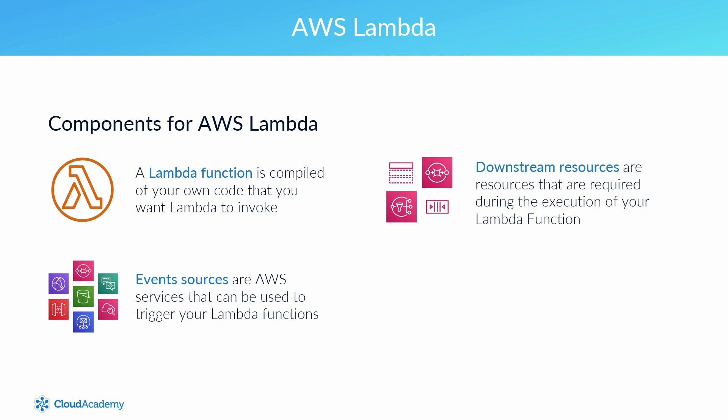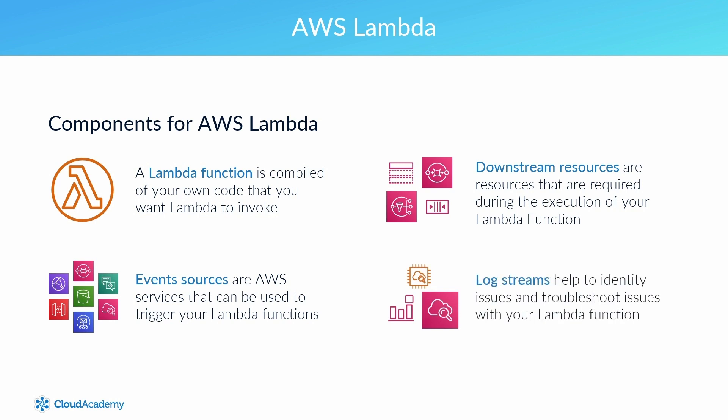Downstream resources are the resources that are required during the execution of your Lambda function. For example, your function might call upon accessing a specific SNS topic or a particular SQS queue — they are not used as the source of the trigger, but instead they are the resources used to execute the code within the function upon invocation. Log streams help you identify and troubleshoot issues with your Lambda function; you can add logging statements to identify if your code is operating as expected, recorded in CloudWatch.